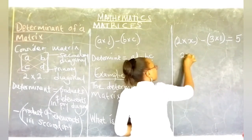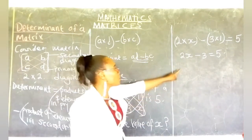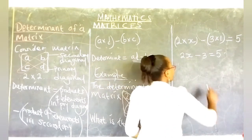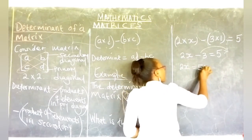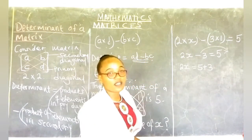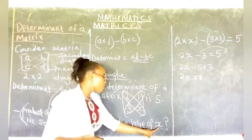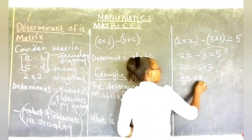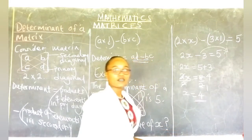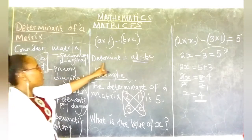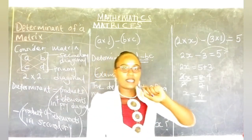If we multiply 2 times X, we get 2X. We subtract 3 times 1, which is 3, and this is equal to 5. We are told to find the unknown X. I am going to take negative 3 to the other side of the equation, so that I am left with 2X equals 5 plus 3, which is plus because it has been taken to the other side. Therefore, 2X equals 8. Because we are only interested in the value of X and not 2X, we divide both sides by 2. So X is equal to 4. We have used the formula that the determinant is the product of elements in the primary diagonal minus the product of elements in the secondary diagonal.